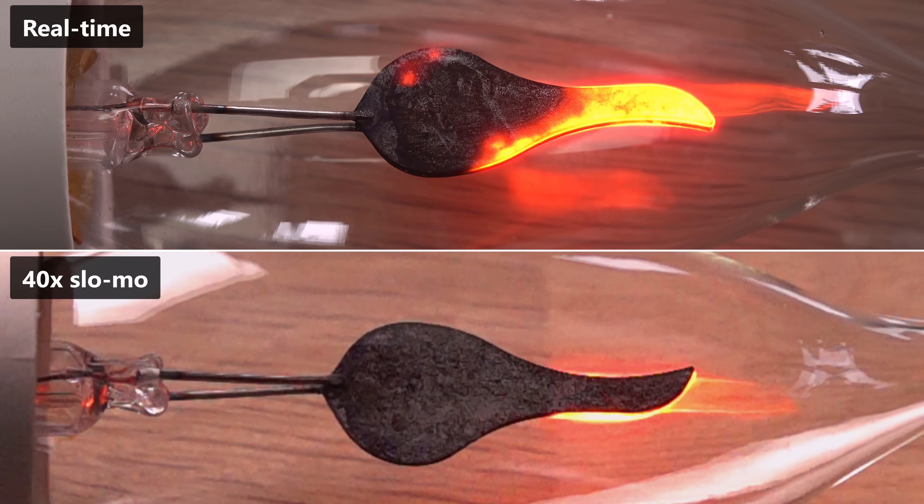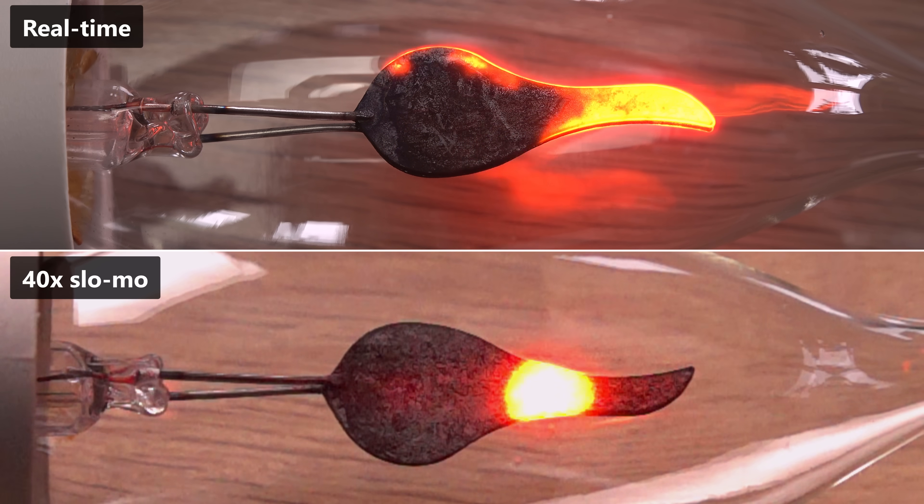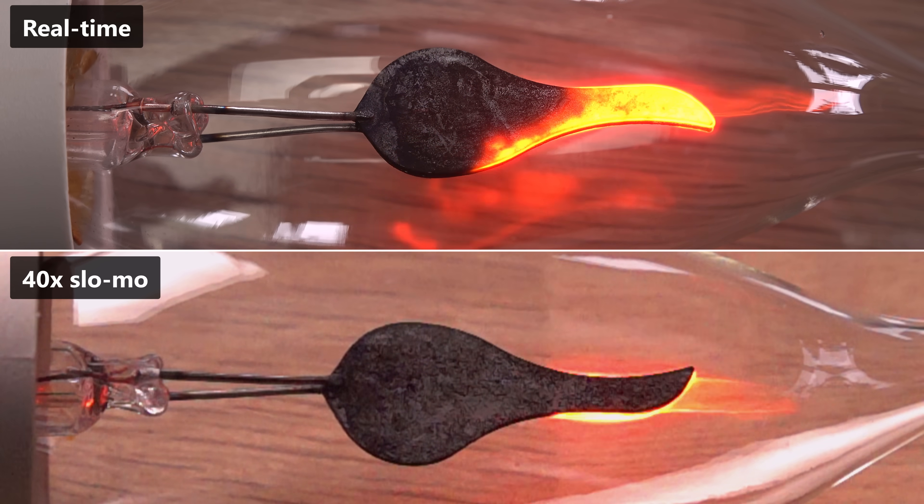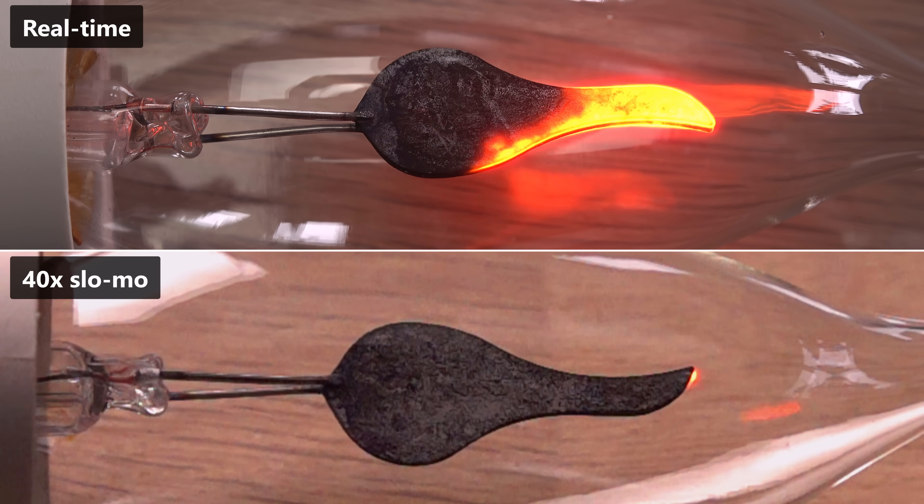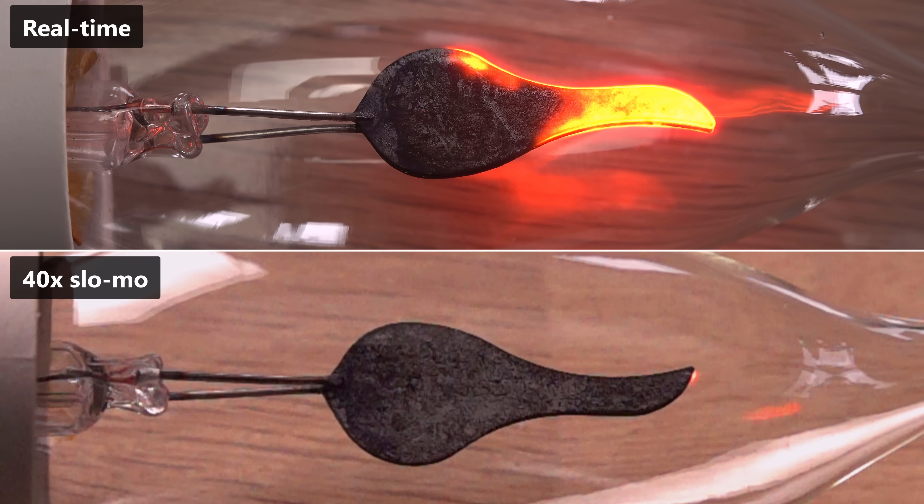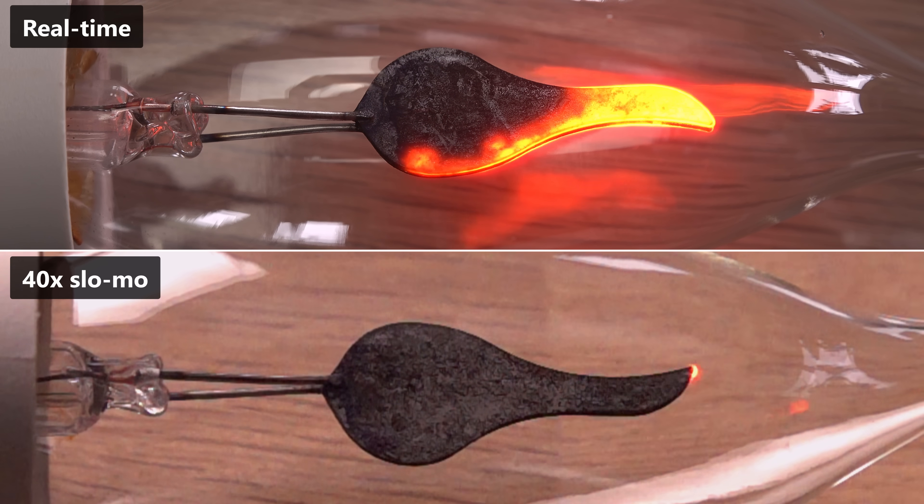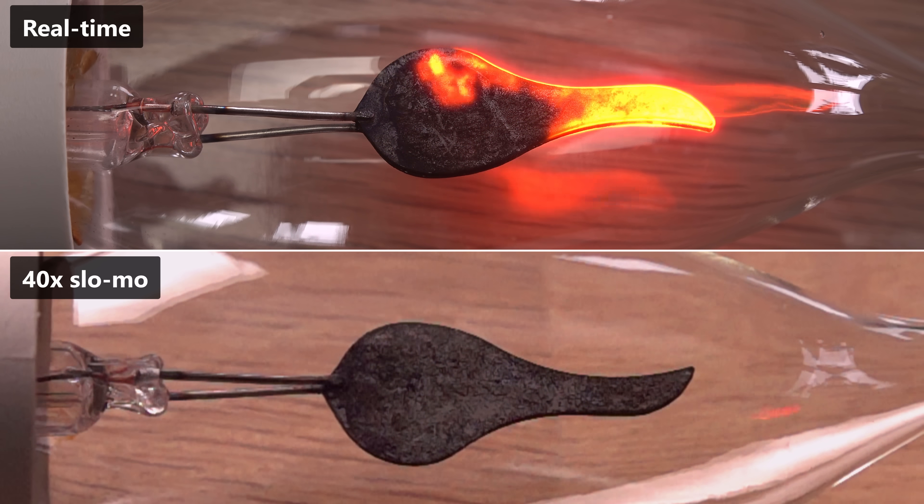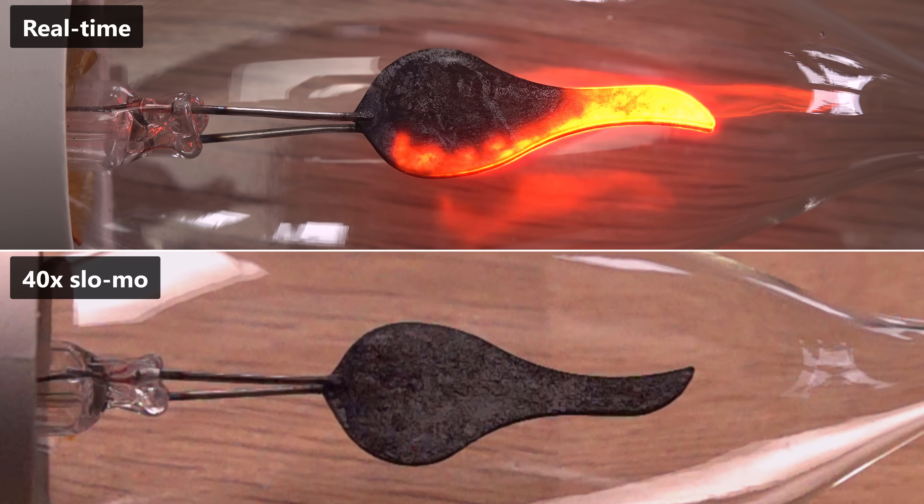But once the discharge reaches the wider part, the low current limits how wide the discharge can be. It can't fill the whole width of the electrode, so the path followed becomes random, based on irregularities in the surface coating, turbulence in the gas, and probably even the random ionizing effect of the background radiation.